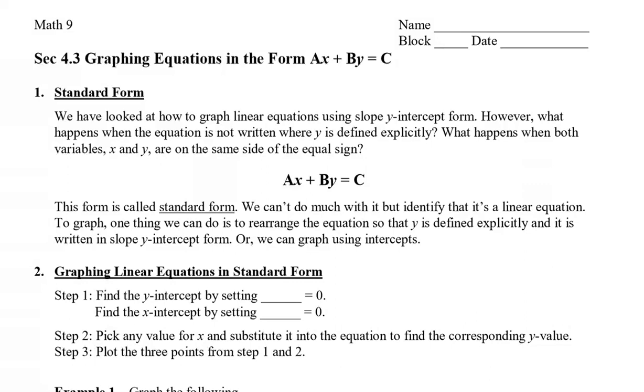Now, we can't do much with this equation, but identify that it's a linear equation. To graph, one thing that we can do is to rearrange the equation so that the y is defined explicitly, and then we graph it in slope-y intercept form. Or, the other option is, we can graph using intercepts, which I'm going to show you.